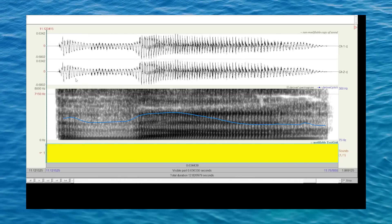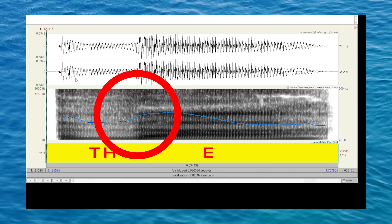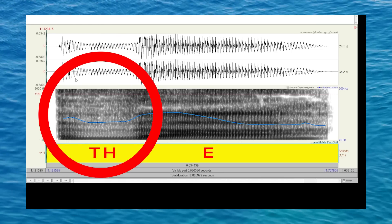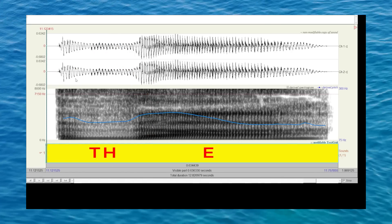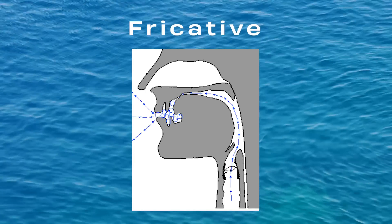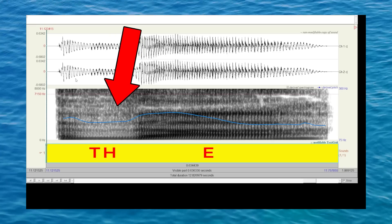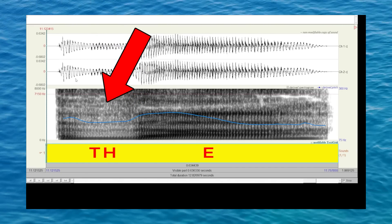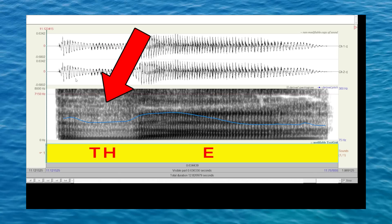Now let's look at the English word 'the.' Here, we can see that there's no abrupt beginning of a vowel — there is a smooth transition between the consonant and the vowel. This tells us that this is not a stop consonant but a fricative, which is a consonant made by the friction of breath in a narrow opening producing turbulent airflow. This allows for the smooth transition because there's no blocking of air. If this were a D sound, we would be seeing an abrupt start of the vowel, but we're not.